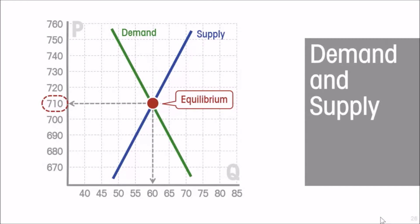In a market, prices will tend to rise or fall towards the market clearing price. At the market clearing price, there is no tendency for price to change. This is our model of the market — it captures the tendency that prices rise or fall except at the market clearing price.